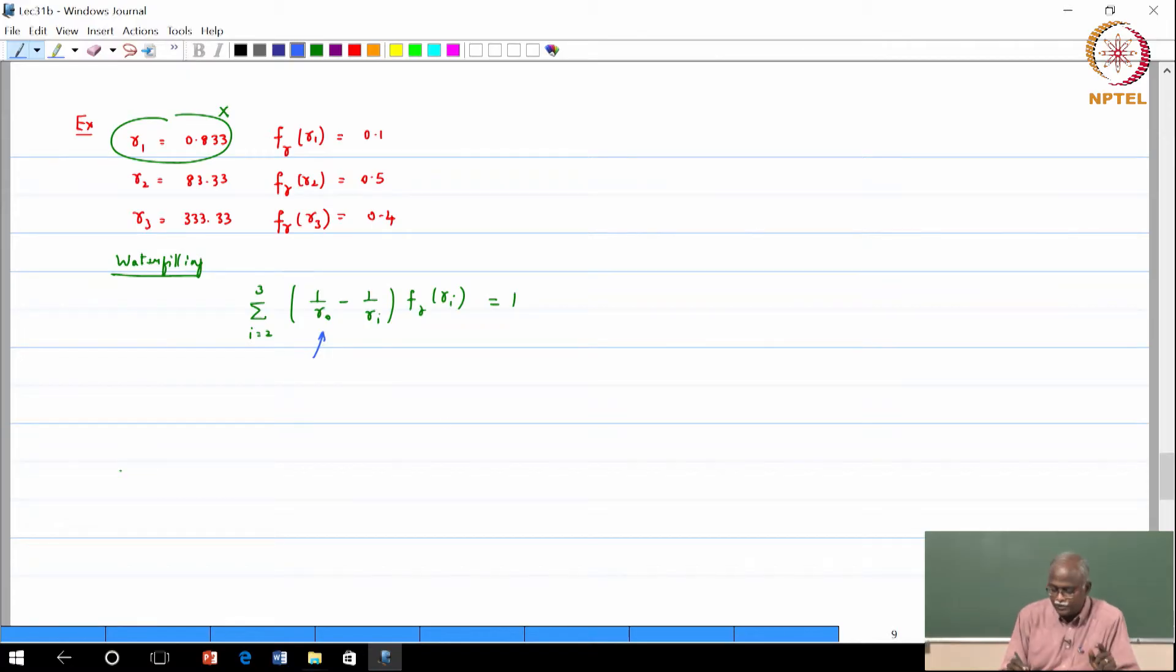This is power allocation because what we are doing here is nothing but P of gamma J divided by P bar from the previous thing. So basically we have to solve this equation to get the value of gamma 0.